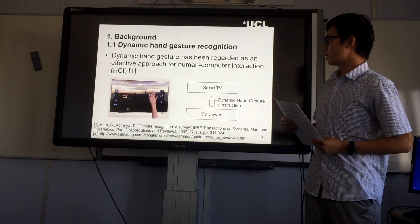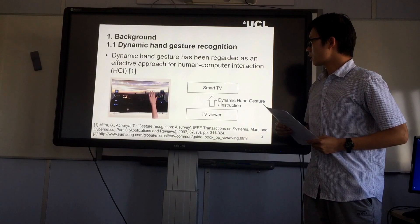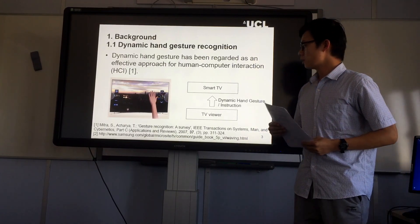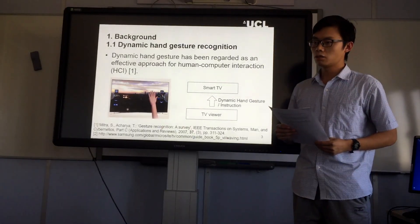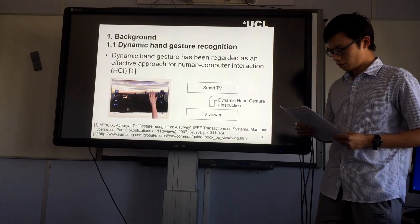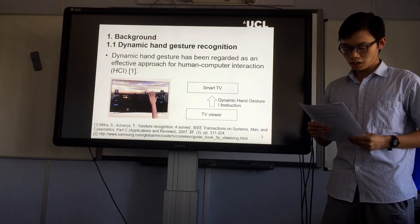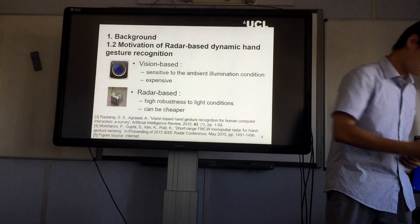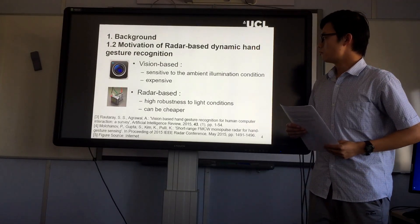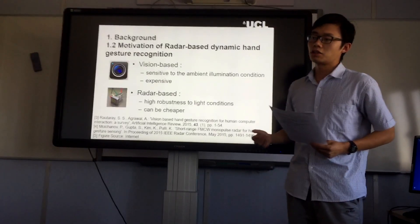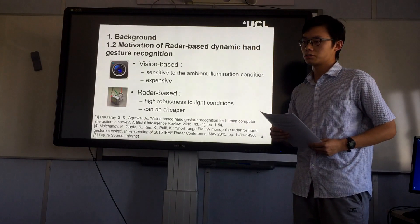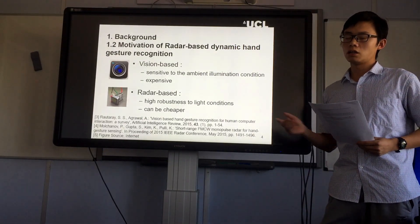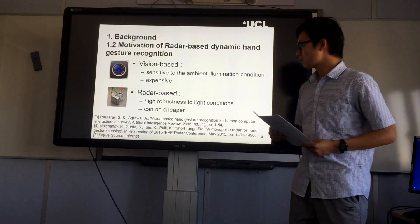Dynamic Hand Gesture has been regarded as an effective approach for human-computer interaction. For example, by using Dynamic Hand Gesture, a TV viewer can send an instruction to a Smart TV at a distance. Since Hand Gesture has growing application values, it has attracted the interest of more and more researchers. In the past years, a variety of vision-based techniques have been proposed to recognize Dynamic Hand Gesture, but these methods are sensitive to ambient illumination conditions, and the hardware may be expensive, especially when the hand gesture is very fast.